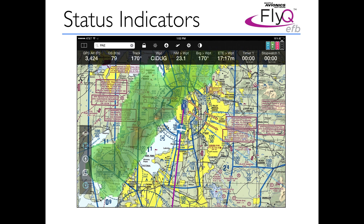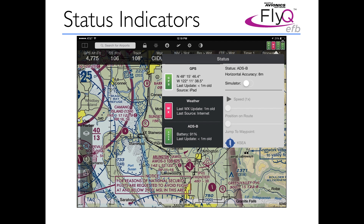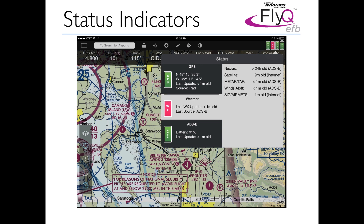If you want to see more, tap any of those four indicators and a pop-up window shows details about your GPS, weather, and ADS-B. The weather tab tells you for each product — Nexrad, satellite, METARs and TAFs, winds aloft, airmets, and sigmets — when they were last updated and whether they came from the internet or ADS-B. Satellite is never broadcast through ADS-B, so it will always come from the internet. Airmets and sigmets are broadcast by ADS-B, but FlyQEFB currently only takes those from the internet.